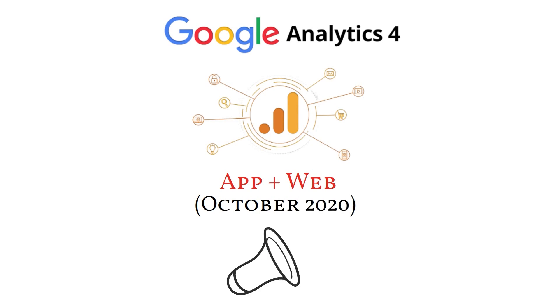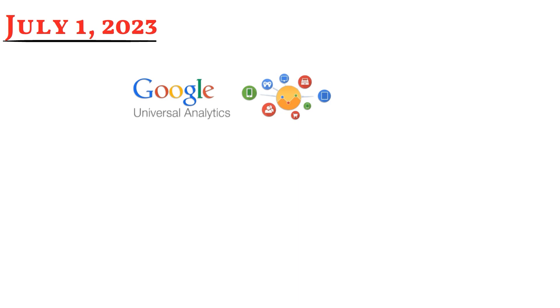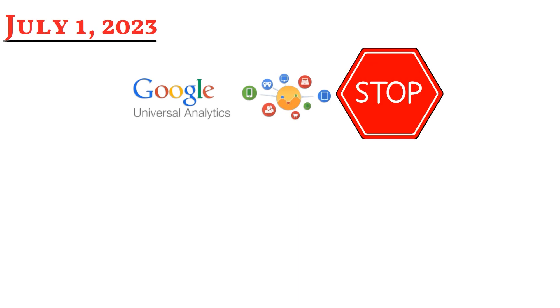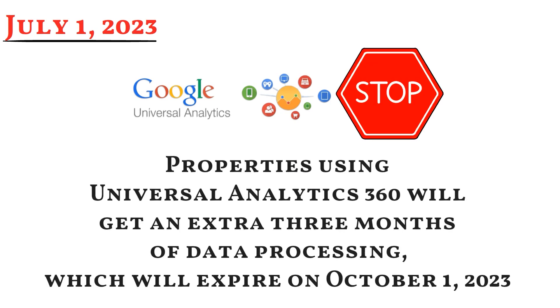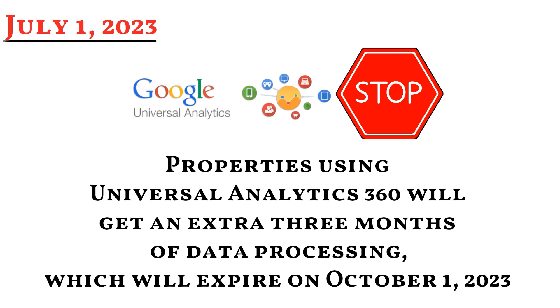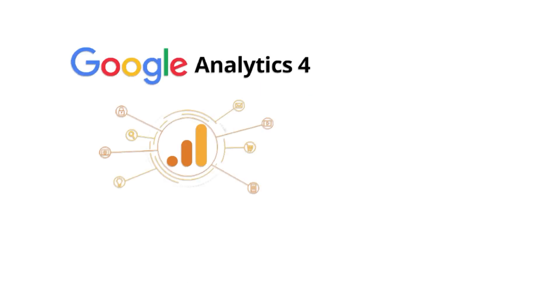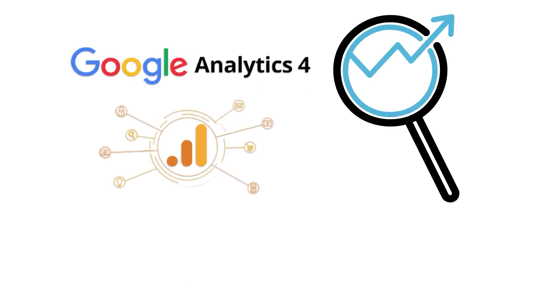But something that you might not know is what Google announced. According to their announcement from July 1, 2023, the basic version of Google Analytics — Universal Analytics — will stop processing new data. Properties using Universal Analytics 360 will get an extra three months of data processing, which will expire on October 1, 2023. So Google Analytics 4 will be the sole Google tool accessible for monitoring website activity.